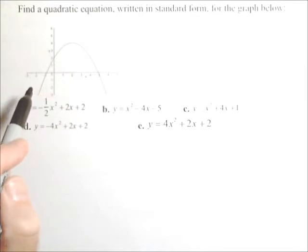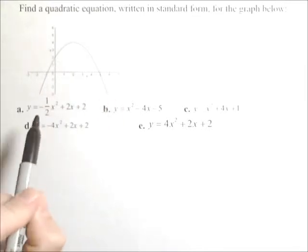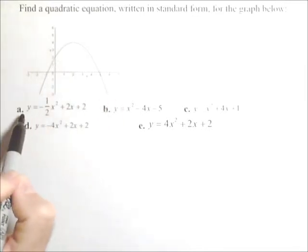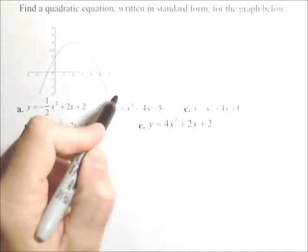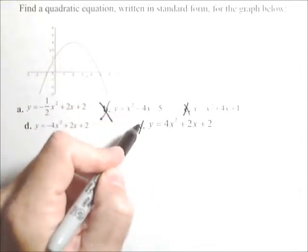For instance, we notice it opens downwards. That means our coefficient on x squared has to be negative. So that works for a and d, but not b, not c, and not e.